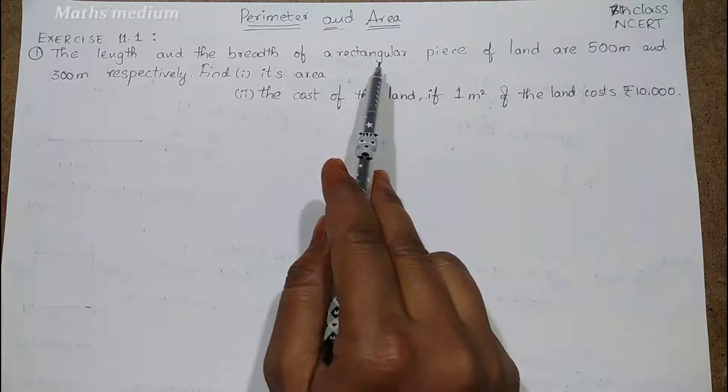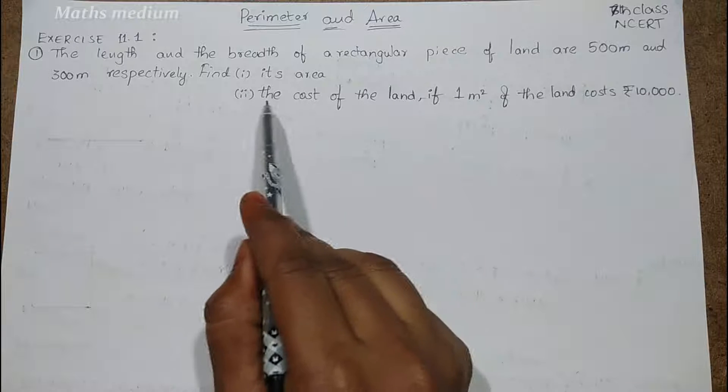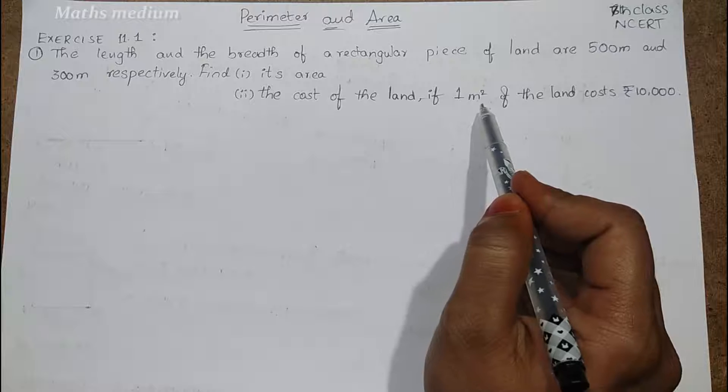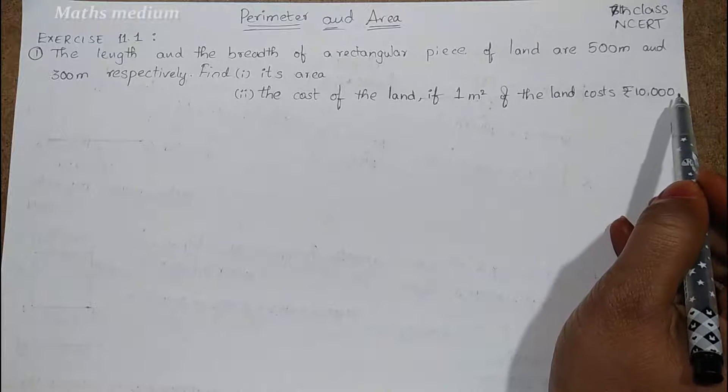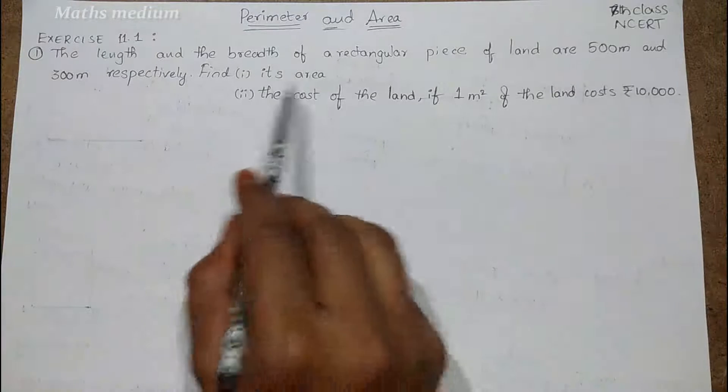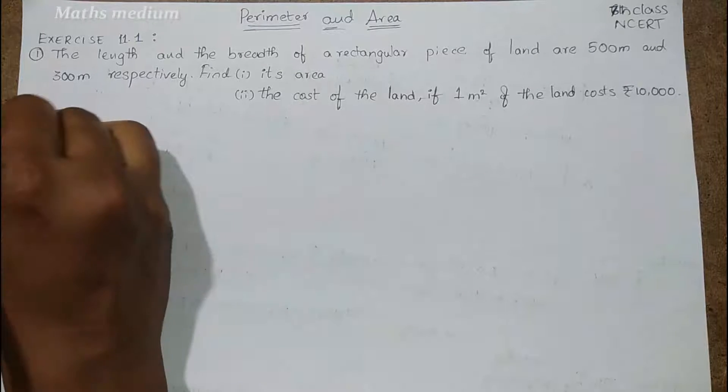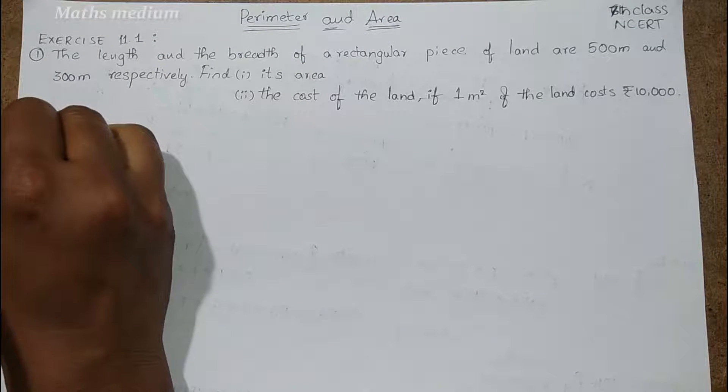We know the rectangular area formula, and after that we have to find the cost of the land. 1 meter square cost is equal to 10,000 rupees, so we have to multiply this 10,000 into the found area. Let's start with the given information.